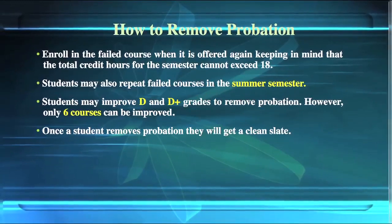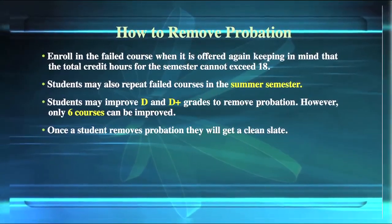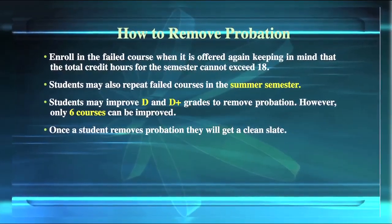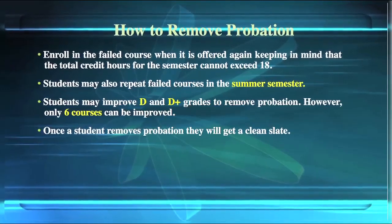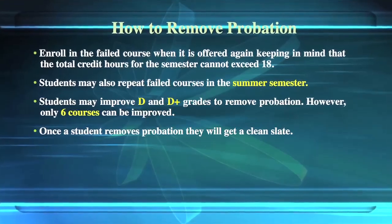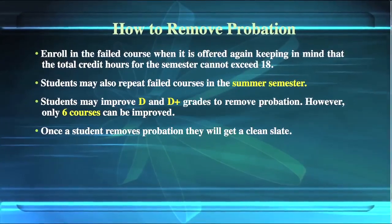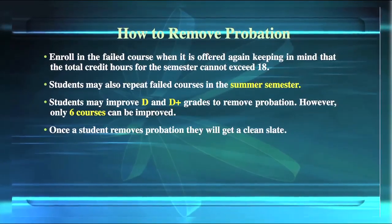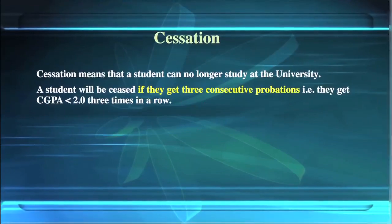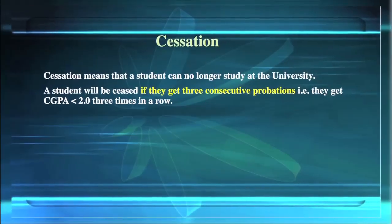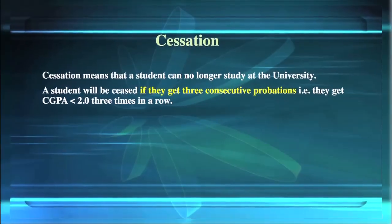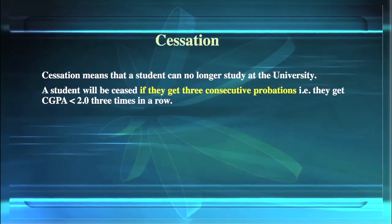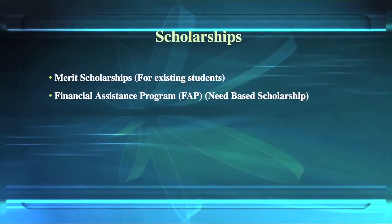If you are put on probation, you should enroll in the failed course when it is offered again, keeping in mind that the total credit hours for the semester cannot exceed 18. Students may also repeat failed courses in the summer semester, and may improve D or D+ grades to remove probation. Once a student removes probation, they will get a clean slate. Secession means a student can no longer study at the university; a student will be ceased if they receive 3 consecutive probations, i.e., CGPA below 2.0 three consecutive times.